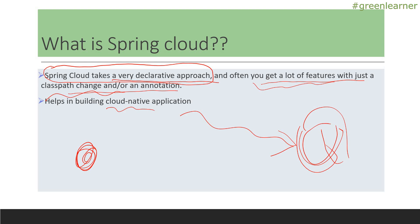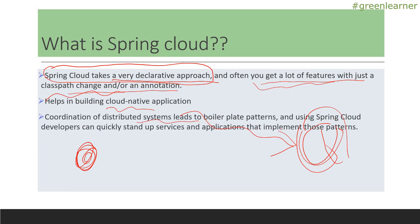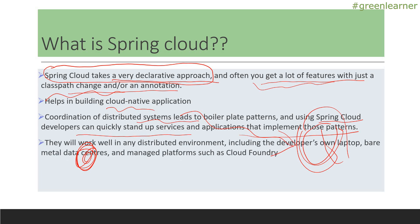Spring Cloud helps in making cloud native applications. Coordination of distributed systems leads to boilerplate code patterns, and using Spring Cloud developers can quickly stand up services that implement those patterns. It avoids the boilerplate code you need to have, taking care of it automatically. It works well in distributed environments including a developer's own laptop, bare metal data centers, and managed platforms.